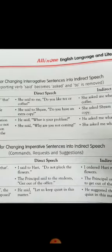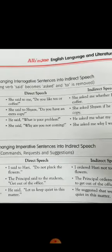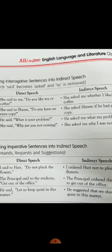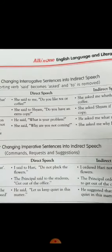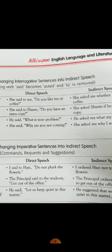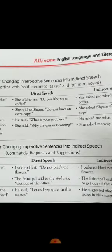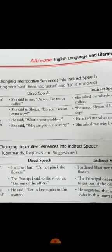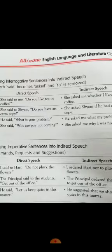Next sentence: She said to me, 'Do you like tea or coffee?' We will change 'said to' into 'asked' and use 'whether' or 'if'; 'you' will change into 'I'; 'like tea or coffee.' And in the end, we will use a full stop instead of a question mark. Next: She said to Shyam, 'Do you have an extra coffee?' She asked Shyam if she had an extra coffee. He said, 'What is your problem?' He asked what my problem was.